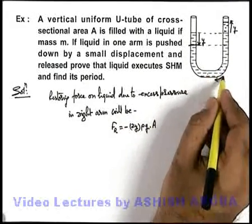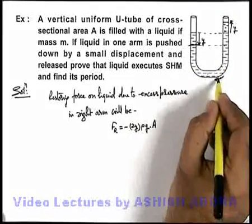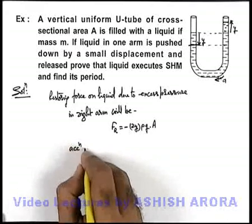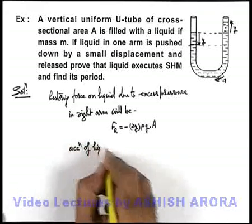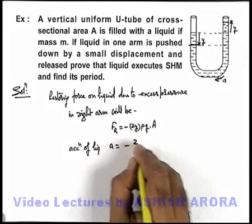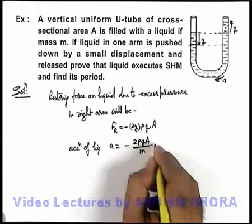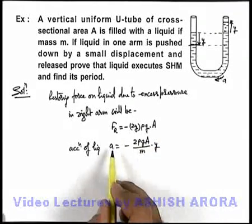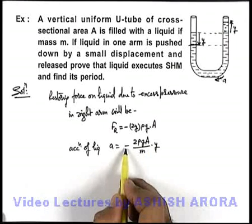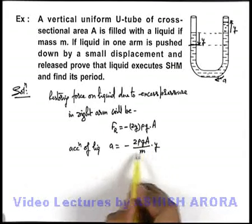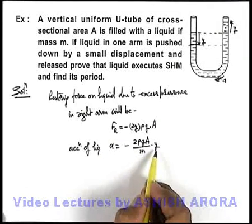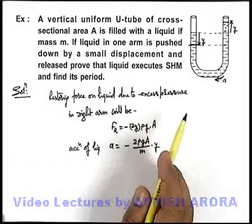So the liquid will have a tendency of motion in this direction, and the liquid will have an acceleration. We can directly calculate the acceleration of the liquid as restoring force divided by mass, so it will be 2ρgA/m into y. We can see that acceleration is directly proportional to y and it is opposite to y, so we can state this is the condition for simple harmonic motion, which verifies that the liquid in this U-tube will execute SHM.